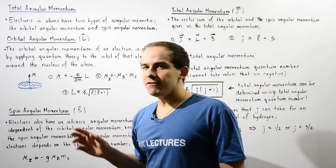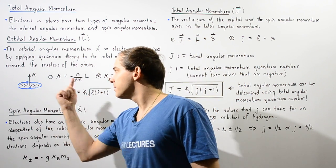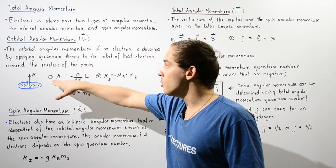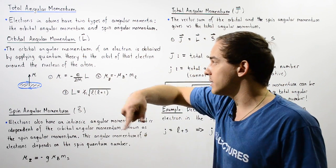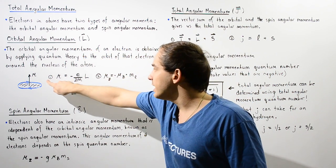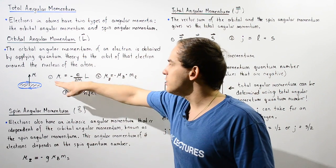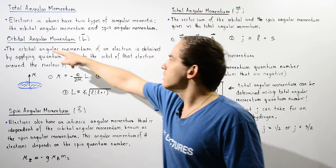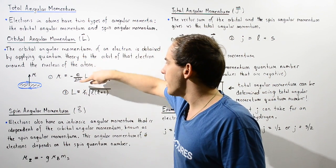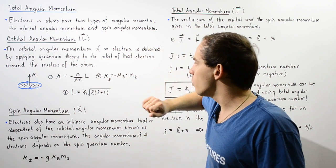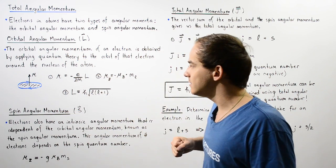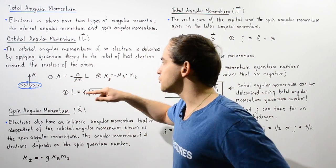If we treat the electron as a particle orbiting the nucleus of the atom, it creates mu, the magnetic dipole moment. The magnetic dipole moment mu of that electron's orbit around the nucleus depends on the orbital angular momentum given by L. Equation one gives us this relationship: mu is equal to negative E divided by 2m multiplied by L, where L is the orbital angular momentum, E is the charge on the electron, M is the mass of the electron, and the negative sign means the two vectors point in opposite directions.